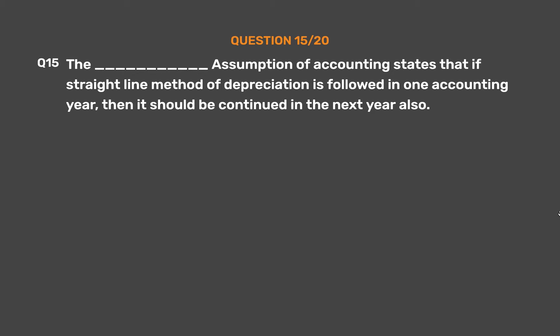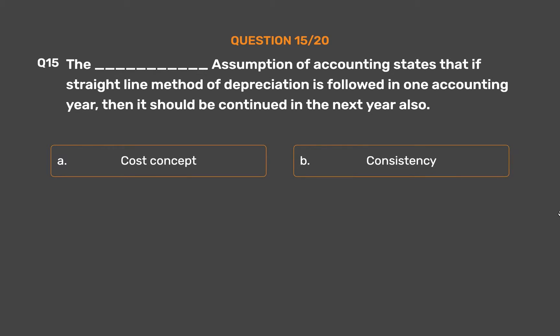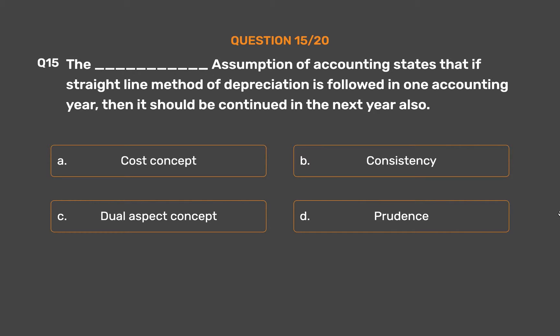Question No. 15: Which assumption of accounting states that if the straight-line method of depreciation is followed in one accounting year, then it should be continued in the next year also? Option A: Cost Concept. Option B: Consistency. Option C: Dual Aspect Concept. Option D: Prudence.